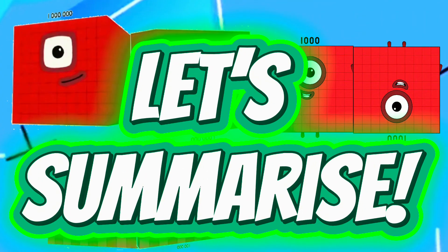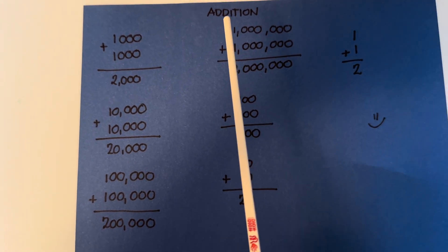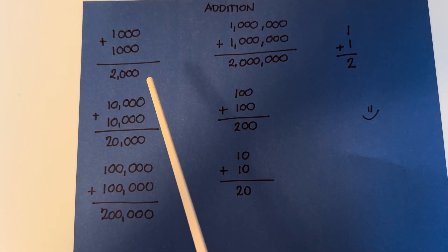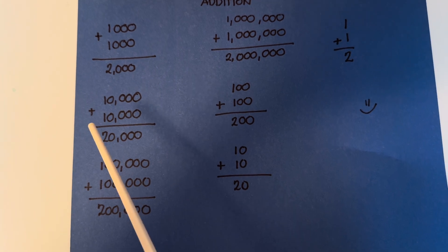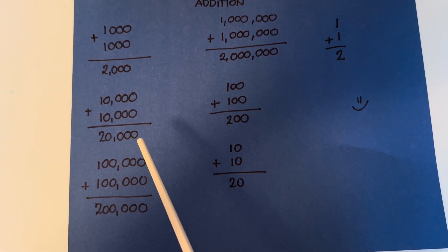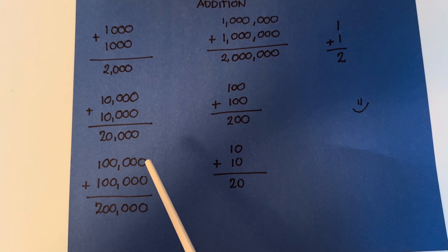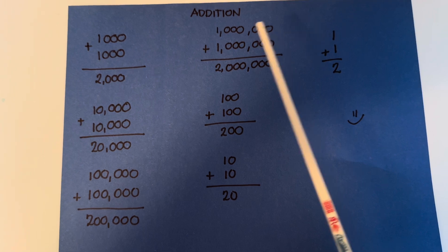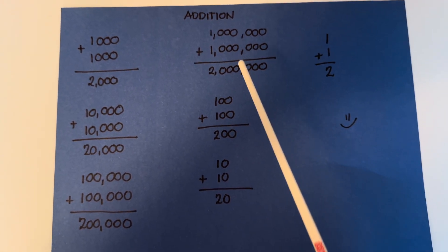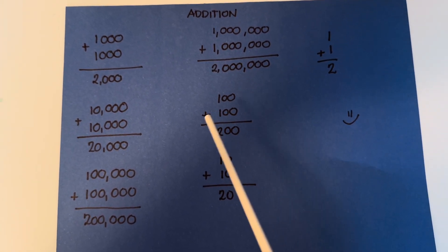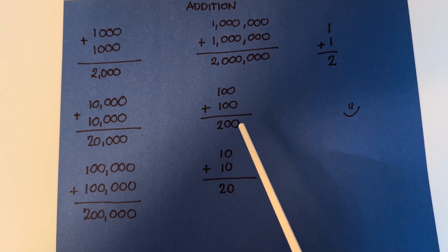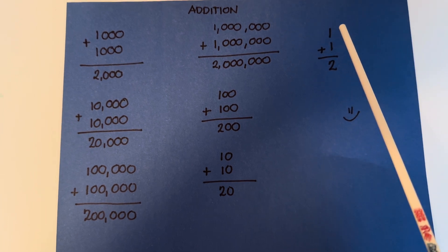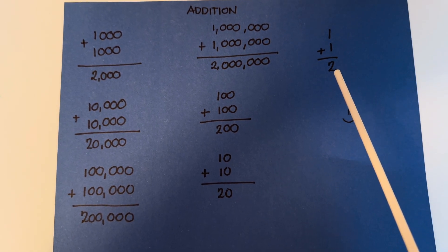Let's summarize. Let's learn addition. 1,000 plus 1,000 is equals to 2,000. 10,000 plus 10,000 is equals to 20,000. 100,000 plus 100,000 is equals to 200,000. 100 plus 100 is equals to 200. 10 plus 10 is equals to 20. 1 plus 1 is equals to 2.